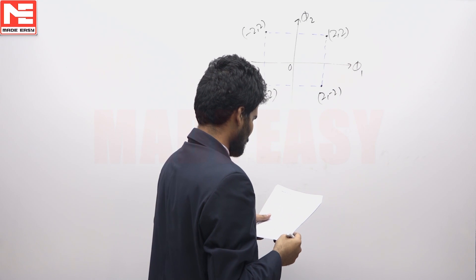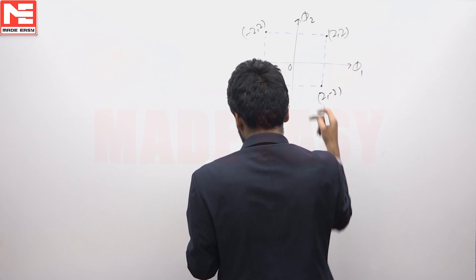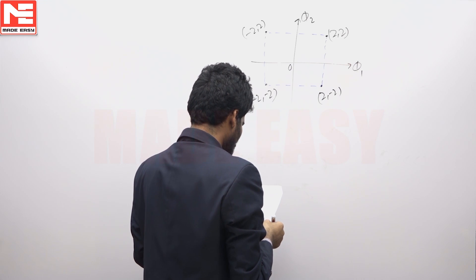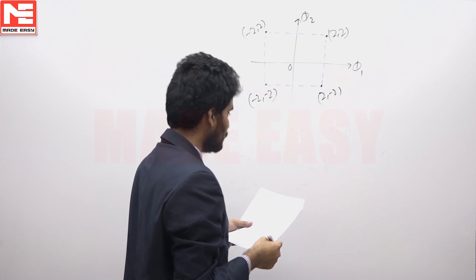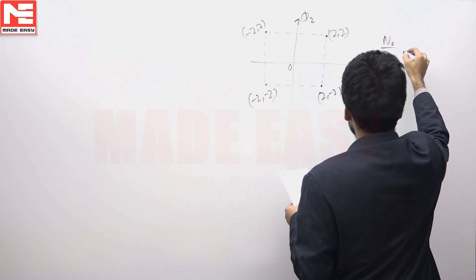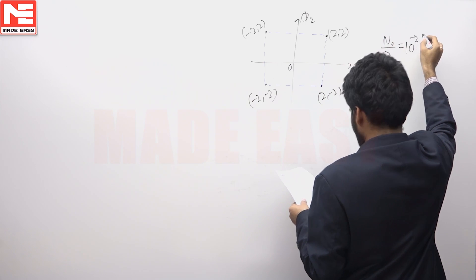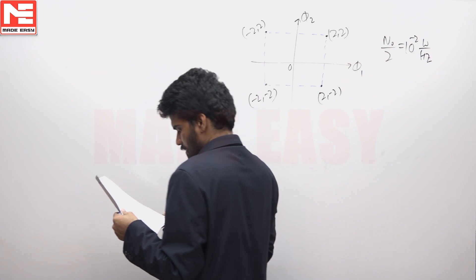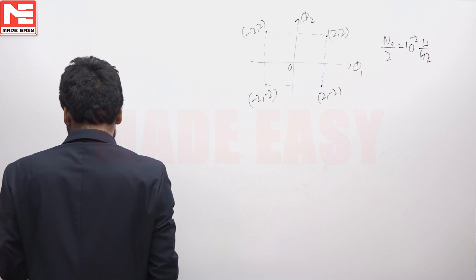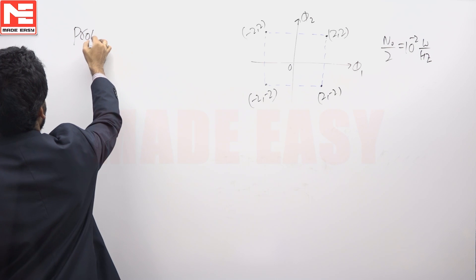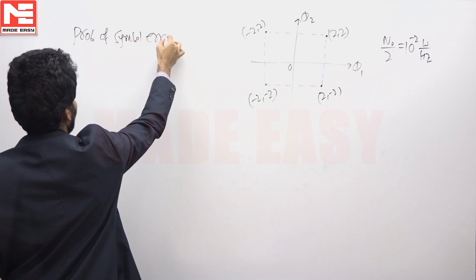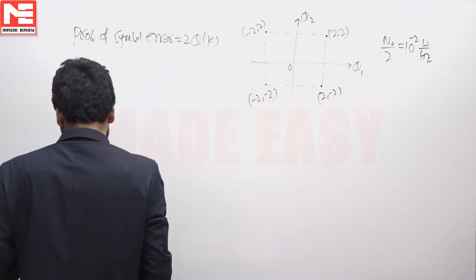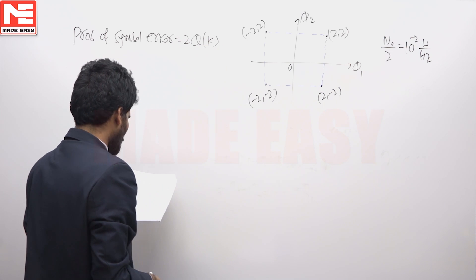Here a constellation diagram of a 4-ary signal is given, where phi1 and phi2 are orthonormal basis functions and 4 symbols have equal probability. This modulated signal is transmitted through an AWGN channel with noise PSD N0/2, where N0/2 = 10^-2 watts per hertz. The probability of symbol error of the system is given as 2Q(k). We have to find the value of k.